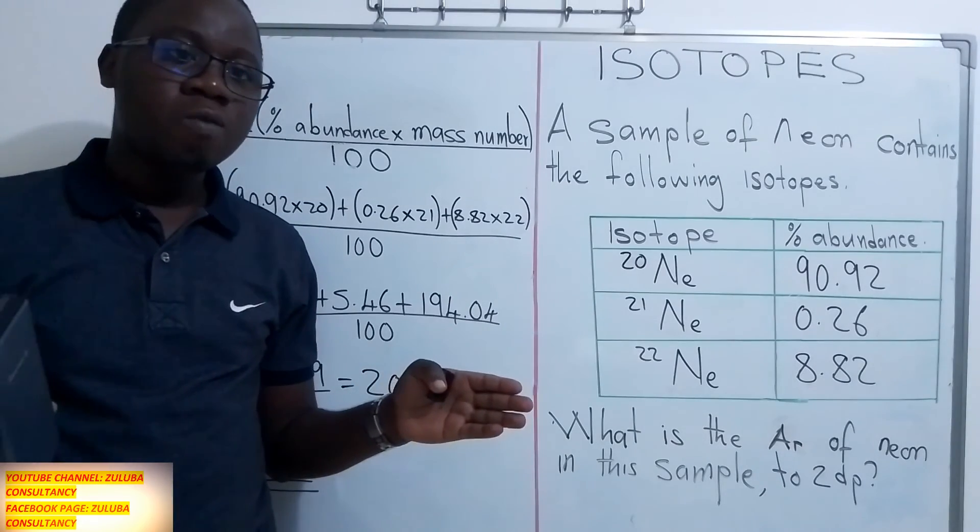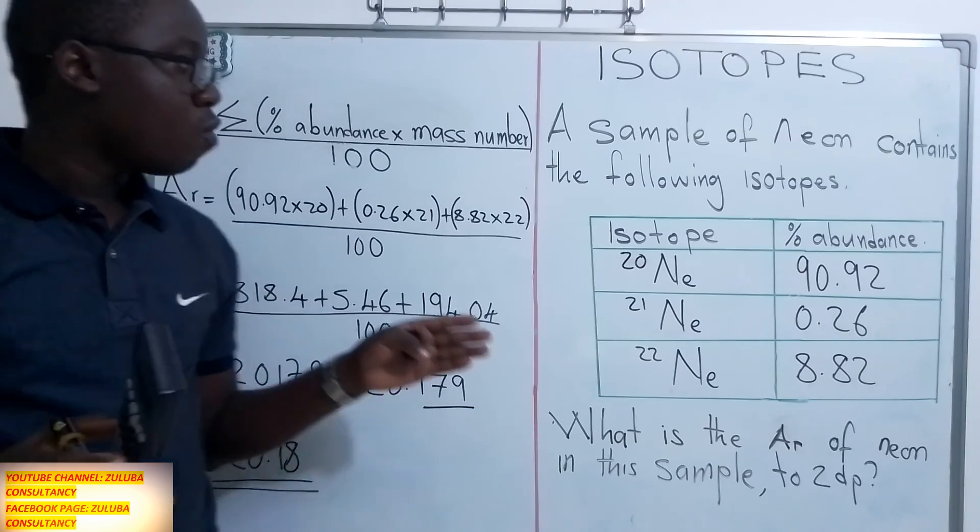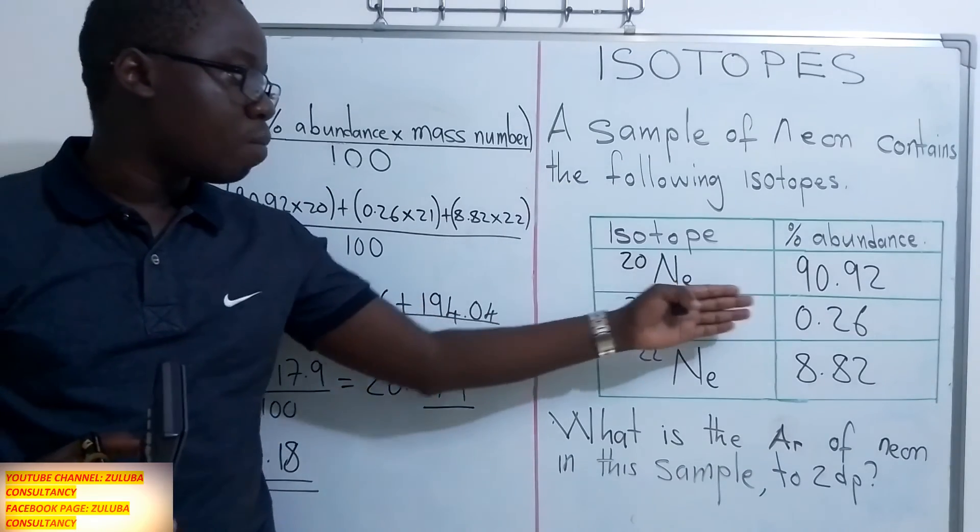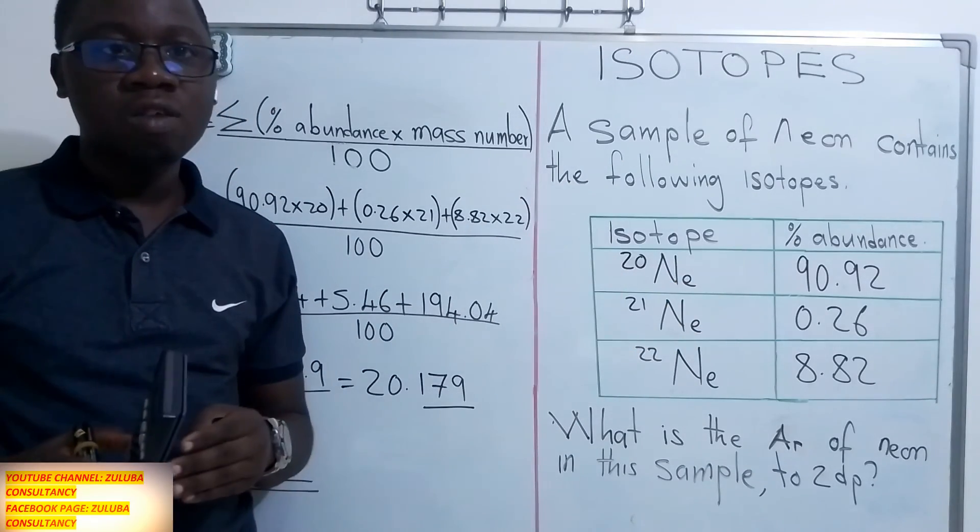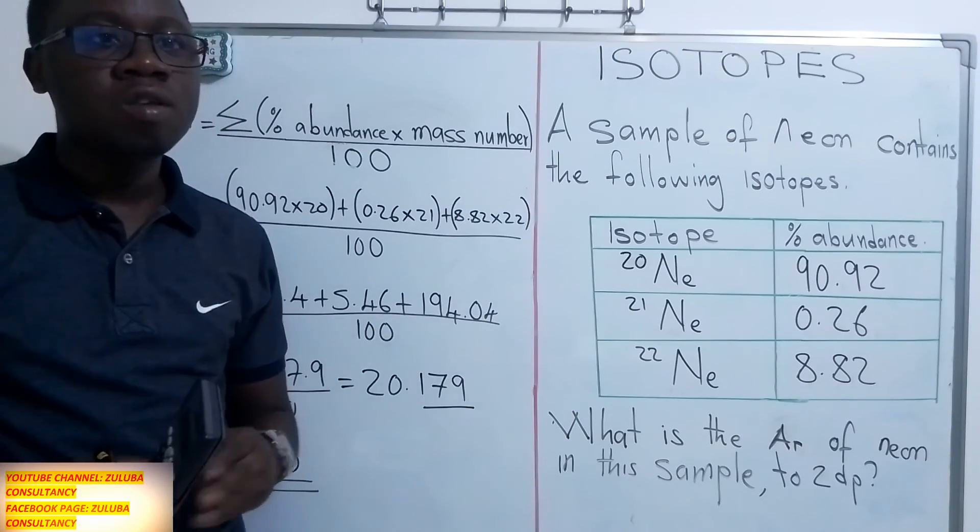So hopefully this video has been very helpful and you have followed all the steps needed for you to calculate the relative atomic mass when you have been given the percentage abundance and the isotopes. Thank you for watching, until next time, it is bye-bye.